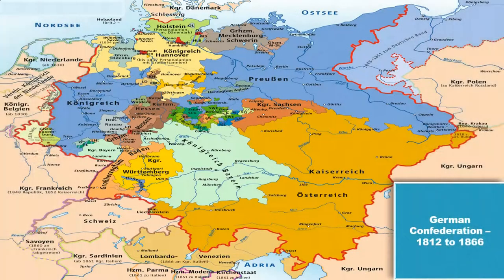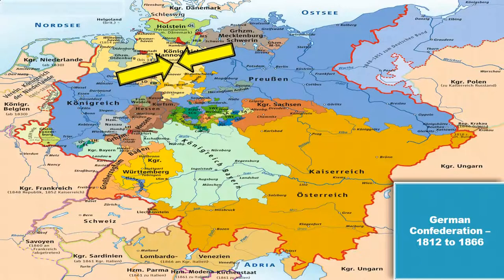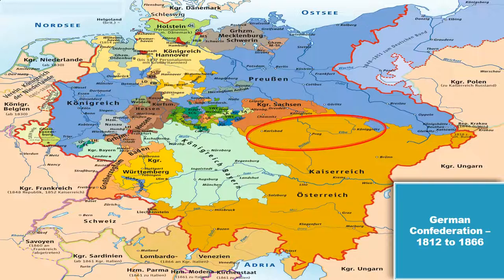Firstly, a swift Prussian maneuver disposed of Hannover and combined the Prussian state. After that, in order to remove the Austrian launch pad in the shape of Bohemia, Prussia took control of Saxony before the arrival of the Austrian armies, thereby effectively utilizing the North German railroad system and started concentrating its forces in Bohemia. Hence, by sheer use of intellect, capabilities, and resources, Prussia turned its geographical disadvantages into advantages.